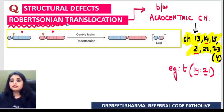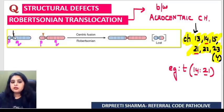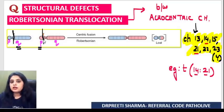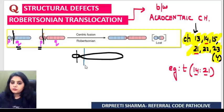In Robertsonian translocation: one chromosome has a tiny P arm and a huge Q arm. The break happens close to the centromere in both chromosomes — whether it's the short arm or the long arm breaking, it always breaks very close to the centromere.